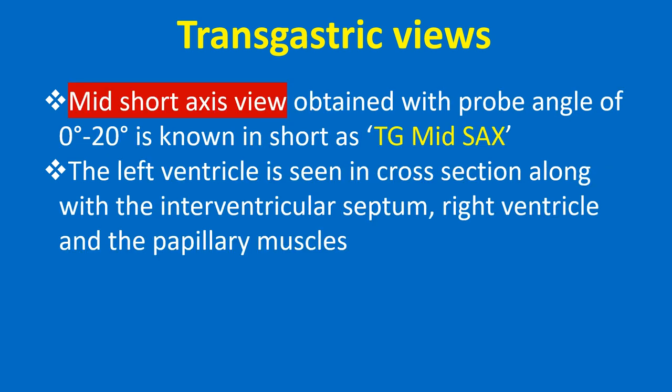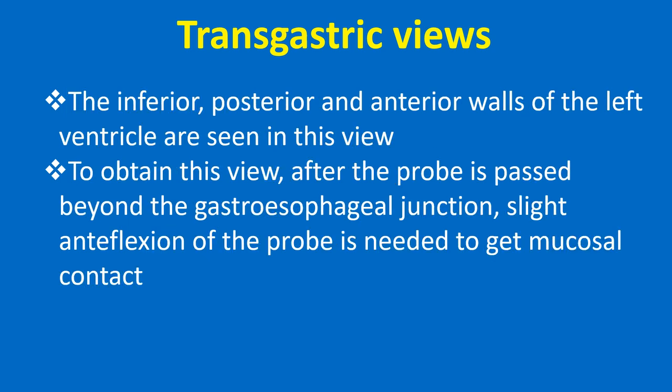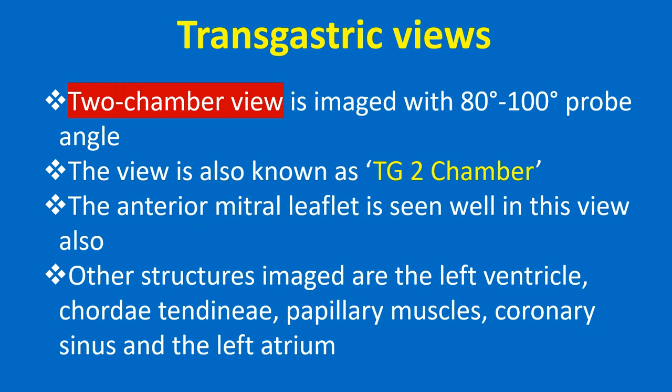The mid short axis view, obtained with probe angle 0-20 degrees, is known in short as TG Mid SAX. The left ventricle is seen in cross section along with the interventricular septum, right ventricle, and papillary muscles. The inferior, posterior, and anterior walls of the left ventricle are seen. To obtain this view, after the probe is passed beyond the gastroesophageal junction, slight antiflexion of the probe is needed to get mucosal contact.